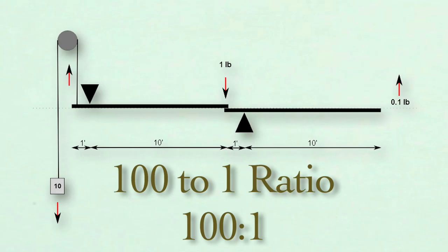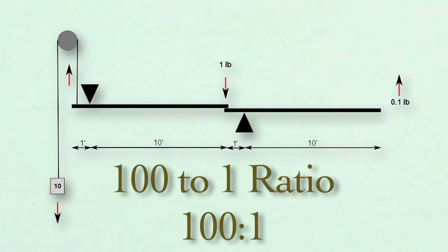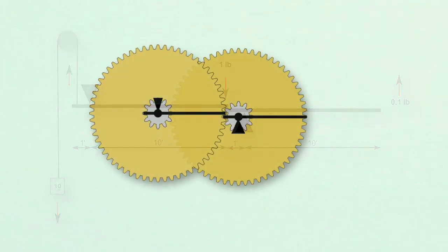Of course, this is impractical in straight levers, but this 100 to 1 total ratio and much more is done in the simplest clock by turning the levers into the rotation of pinions and wheels.